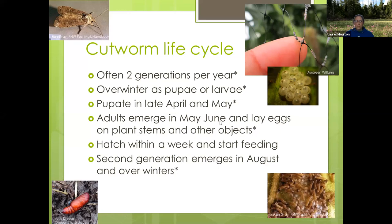Adults emerge in May and June, lay eggs, and those hatch within a week and start feeding. Eggs are typically laid on weeds or lower-growing vegetation, though they can be laid higher up — for example on bird mesh around a corn patch. After hatching, you'll find them in groups. Some climb and do most of their damage above ground; others hang out underground and come up at night to clip off seedlings. Cutworms typically hide in the soil during the day so you won't see them unless you go out at night.